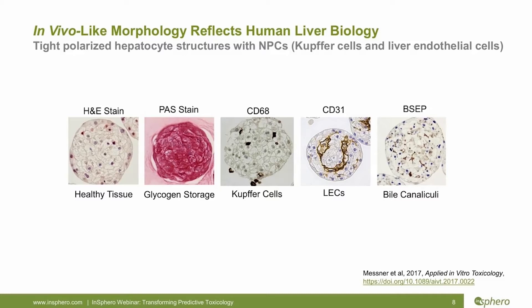BSEP, or Bile Salt Export Pump, is a key efflux transporter responsible for removing bile acids from hepatocytes into bile canalicular networks. It is really insightful that we see this distinct BSEP staining, because you won't see this in most 2D cultures. Without high confluency in 2D and without tight hepatocellular connections, hepatocytes will flatten out, de-differentiate, and lack the polarity that is key to their in vivo function. Without polarity, BSEP and other efflux transporters will not align properly, and these crucial bile canalicular networks will not reform.